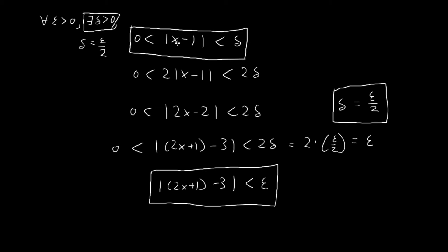We can establish the fact that there exists a delta larger than 0 because we actually just found the delta. We found that if we set delta equal to epsilon over 2, then this conditional statement immediately results: if the absolute value of x minus 1 is smaller than delta, then this term is smaller than epsilon. Also, this choice is by no means unique — we only need to show that there exists a delta such that this conditional statement can be true.